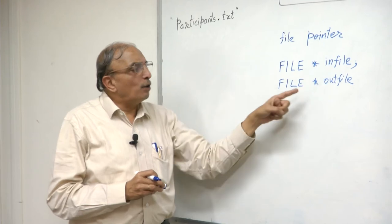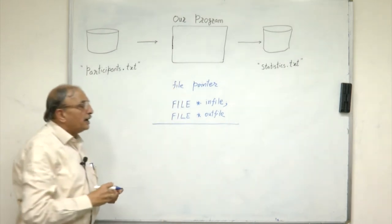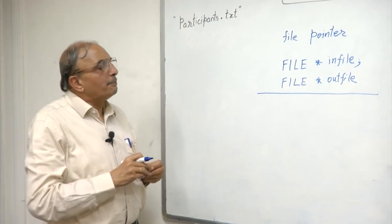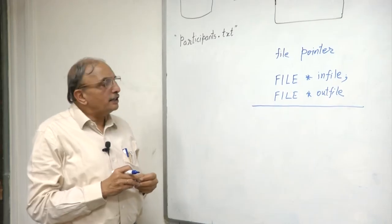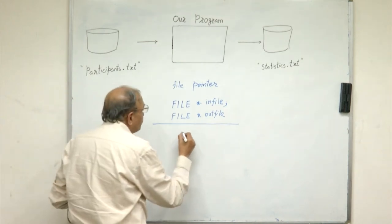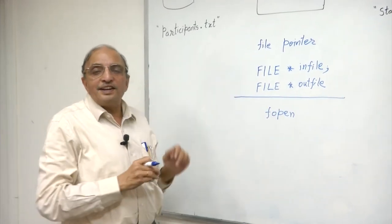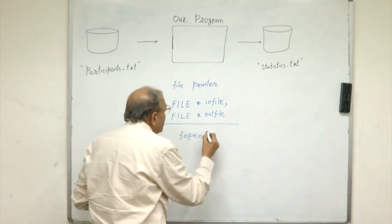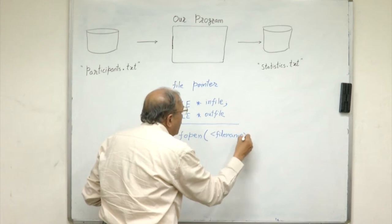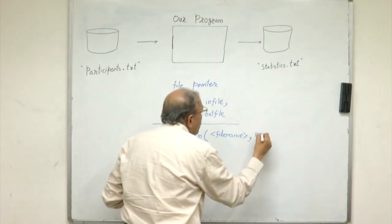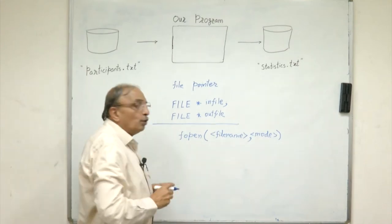Coming back to our discussion, having declared such file pointers in our program, as I mentioned, we have to have an association with an internal file name with an external file. Consider, for example, we want to read data from the file called participants.txt. For that, there is a special function called fopen. As the name suggests, we are opening an external file. This fopen function requires two parameters: the first parameter is the external file name, and the second parameter is called a mode value, which is actually a text symbol indicating in what fashion we wish to use the data.